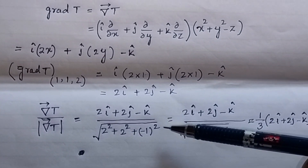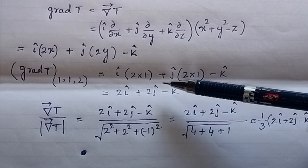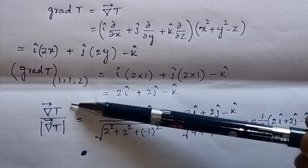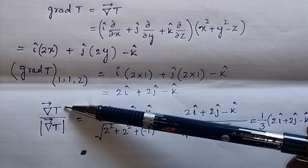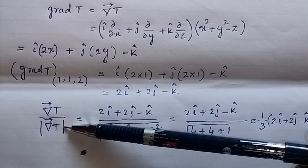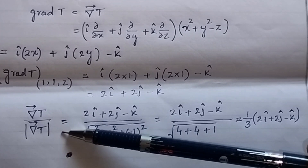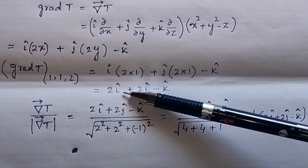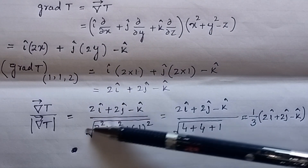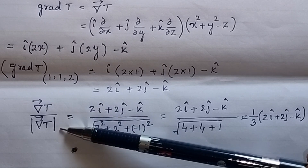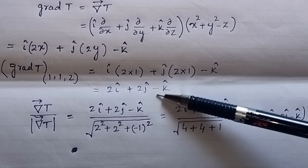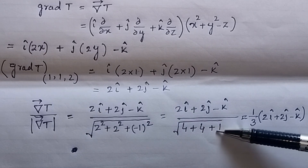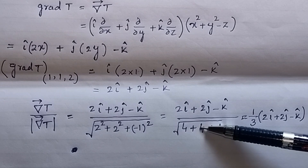Since we have to find the direction of the mosquito, we need to find the unit vector. To find the unit vector, we take the gradient of the temperature divided by the magnitude of the gradient of the temperature. The gradient at point (1, 1, 2) is 2i-cap plus 2j-cap minus k-cap, and the magnitude is equal to the square root of 2 squared plus 2 squared plus 1 squared, which gives square root of 4 plus 4 plus 1, that is square root of 9, equal to 3.